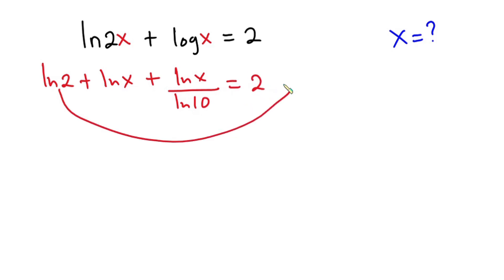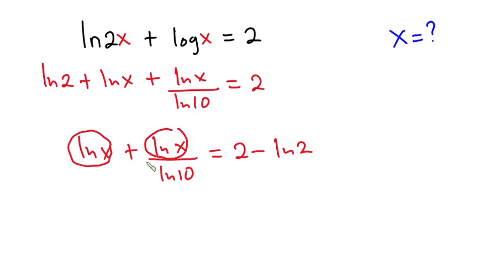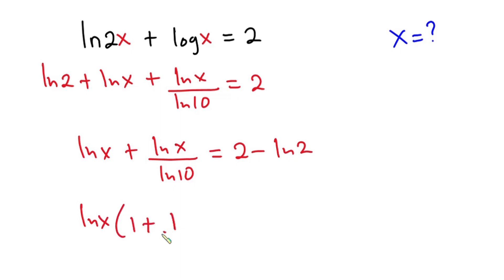Now let's move the natural log of 2 to the right-hand side, so we have natural log of x plus natural log of x over natural log of 10, equal to 2 minus natural log of 2. We can see natural log of x appears twice, so let's factor it out: natural log of x times (1 plus 1 over natural log of 10) equals 2 minus natural log of 2.